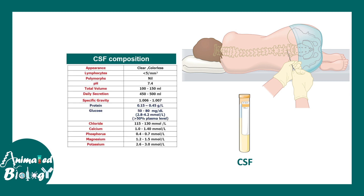Normally, CSF has this composition: it has a very small amount of protein, a substantial amount of glucose, and different concentrations of ions like chloride, calcium, magnesium, and potassium. It is also very important to note that lymphocytes are very few — only about five or even fewer than five cells per cubic millimeter.